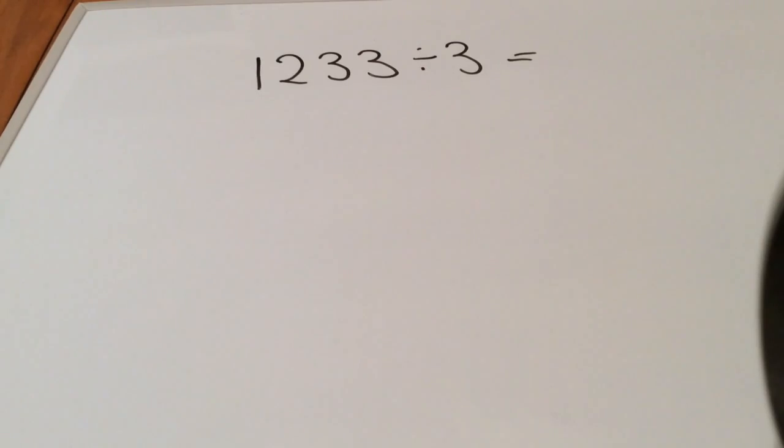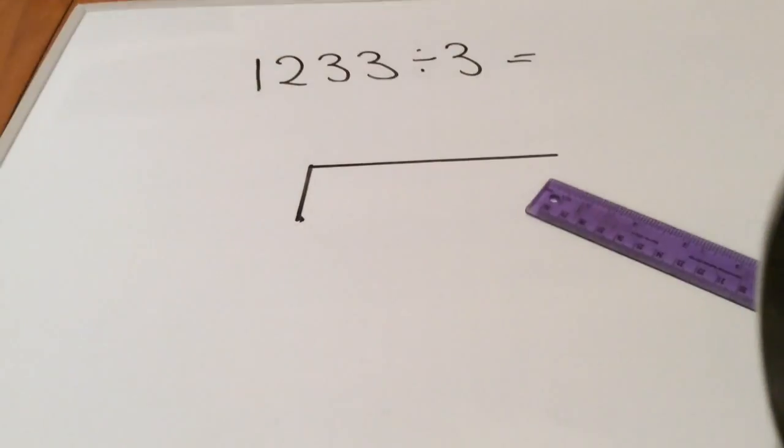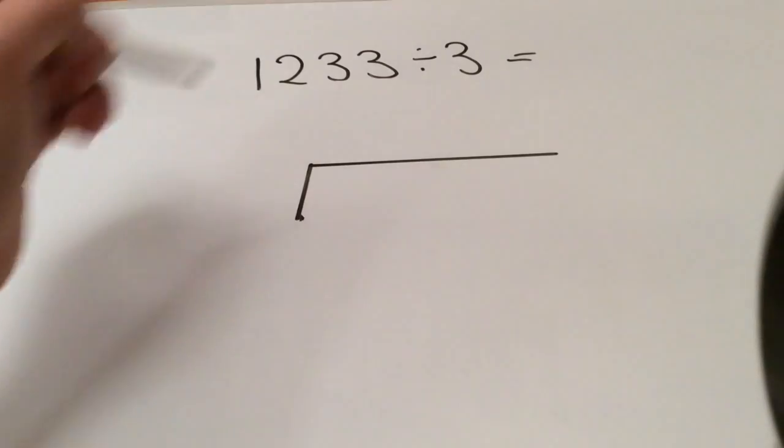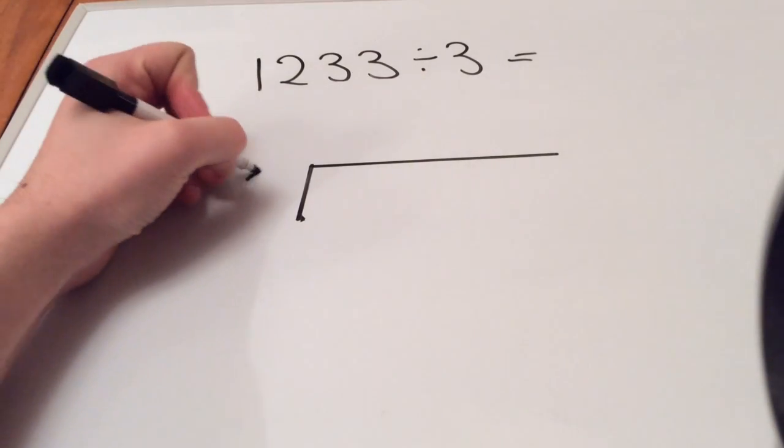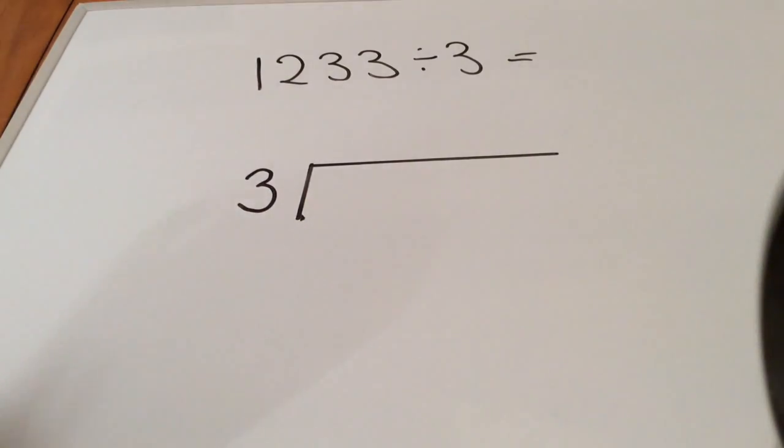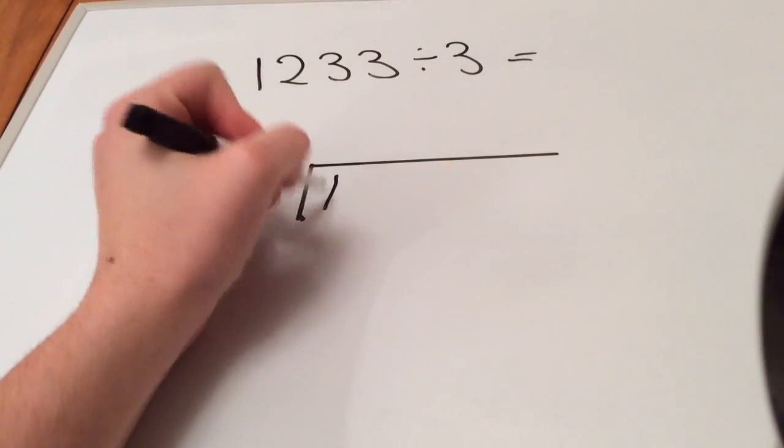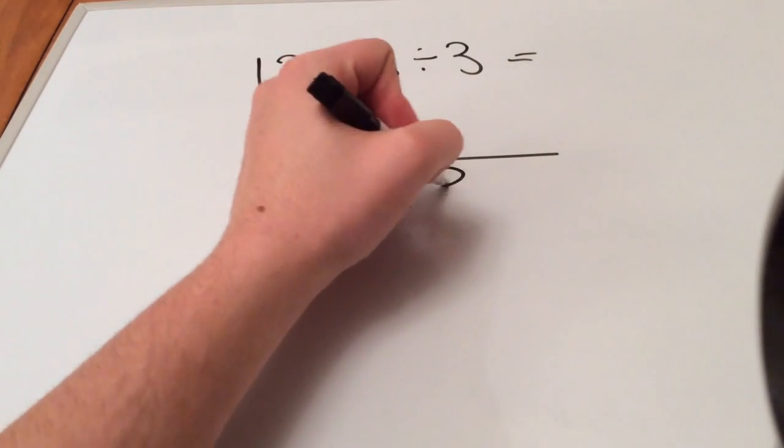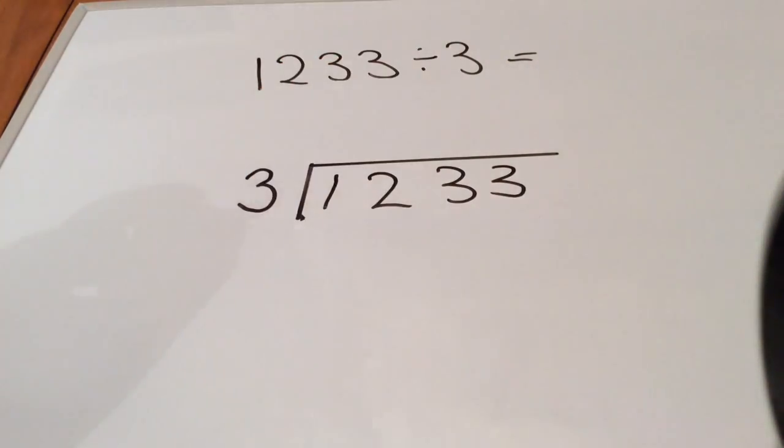The first thing we need to do is draw the bus stop itself. The number we are dividing by goes here, so we're dividing by 3. Number 3 goes there. The other number goes here.